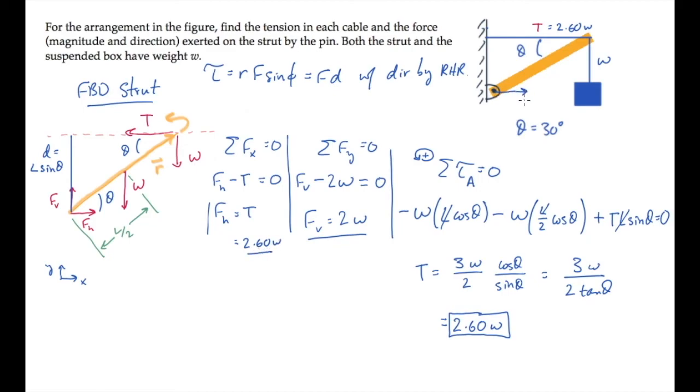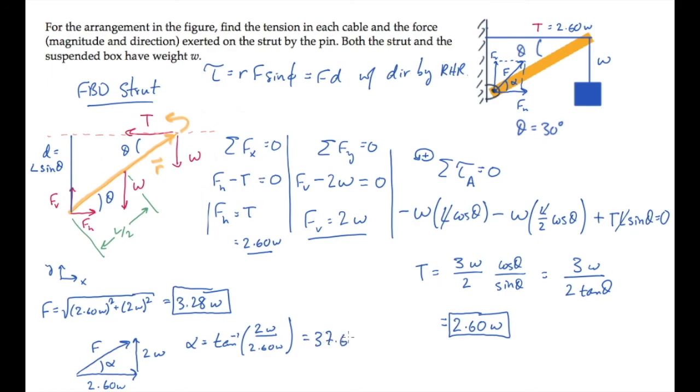Now that we know the components of the force F, I'll draw them here. We can find its magnitude and direction. The magnitude of the force F, we find using the Pythagorean theorem. Square the components, add them up, and take the square root to see that F equals 3.28 times the weight W. The direction of that force can be found using the inverse tangent function. Here's the horizontal and vertical components with the magnitude. I'll call the direction of that force alpha, draw it here and on the figure. Alpha equals the inverse tangent of the opposite side, 2W, divided by the adjacent side, 2.60 W. When you calculate that, you find the angle alpha is 37.6 degrees.